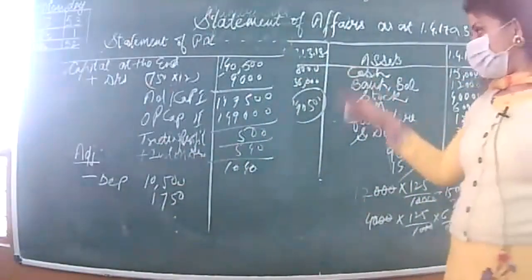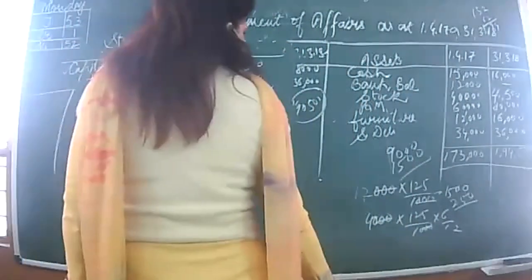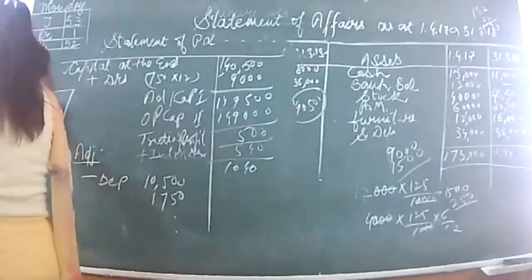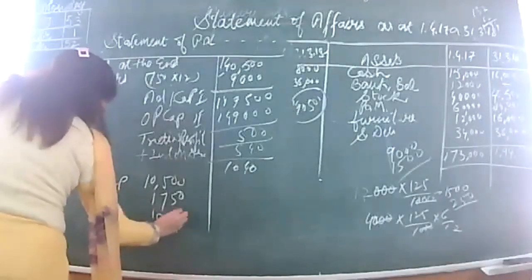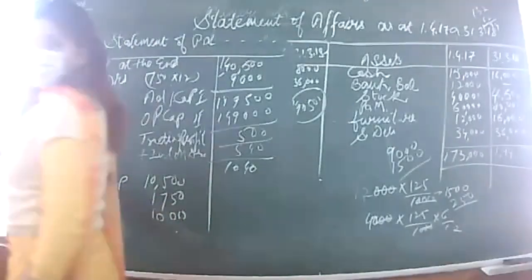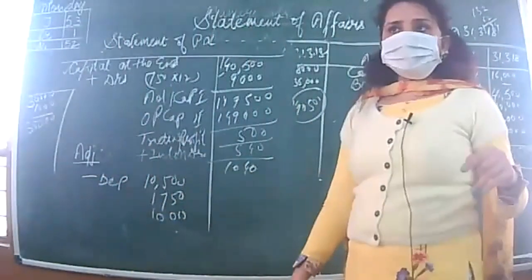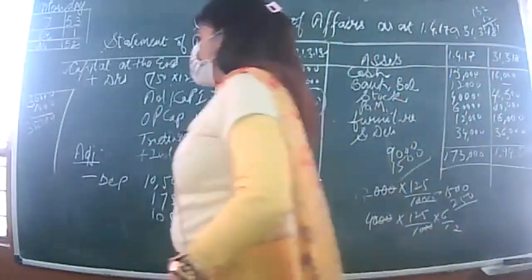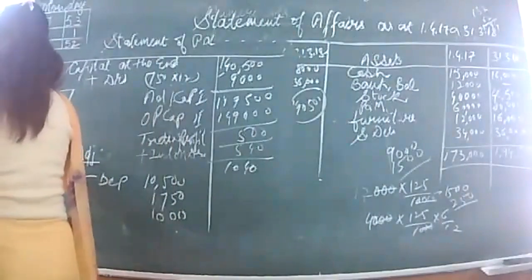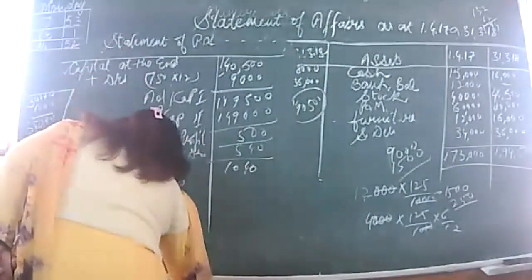Now for debtors: closing debtors are 36,000. Bad debts of 1,000 are deducted first. Then provision for bad debts is calculated on the remaining balance (35,000) at 5% = 1,750. Less bad debts: 1,000. Less provision for bad debts: 1,750.